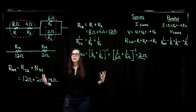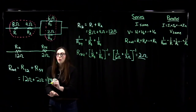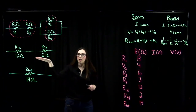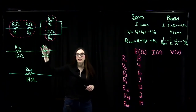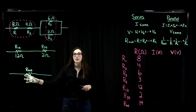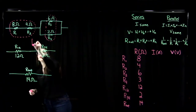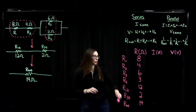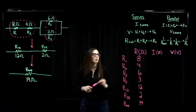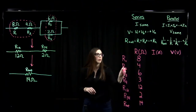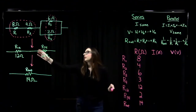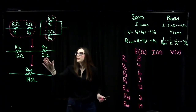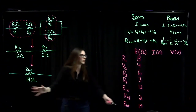I drew a table to keep track of values: R1 = 8 ohms, R2 = 4 ohms, R3 = 6 ohms, R4 = 3 ohms. The combination R1,2 = 12 ohms, R3,4 = 2 ohms, and the total resistance of all resistors together is 14 ohms. Now our task is to find the current through each of the four resistors.